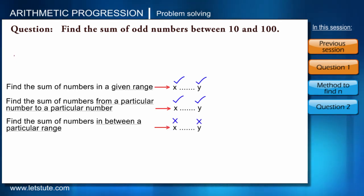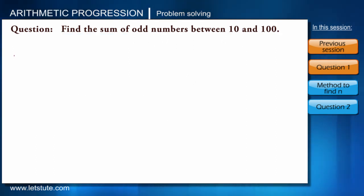But if it says find the sum of numbers in between a particular range, then we will have to exclude upper limit and lower limit. Like if the very same question was asking to find sum of even numbers, we wouldn't have considered 10 and 100.